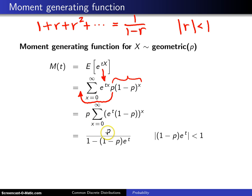the p just gets transferred down here to the numerator, 1 over 1 minus that common ratio, 1 minus p e to the t,